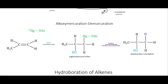The alkoxymercuration-demercuration is just the same thing but done with species that are not water. Instead of putting an alcohol group on it, we can put an RO group on it, generating an ether — an organomercurial ether. We again bring in sodium borohydride to kick off the mercury species and end up with the Markovnikov product, but now with an ether rather than just an alcohol.